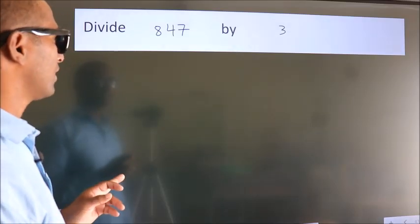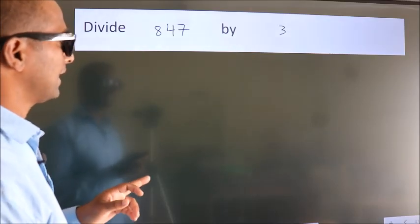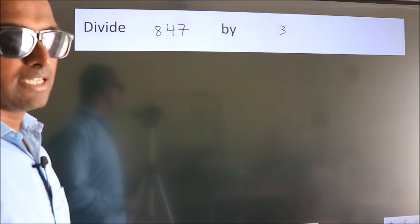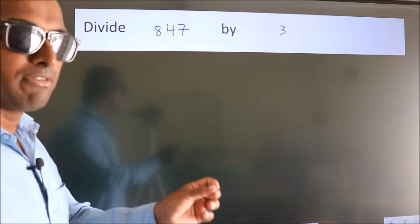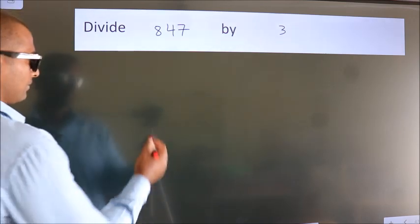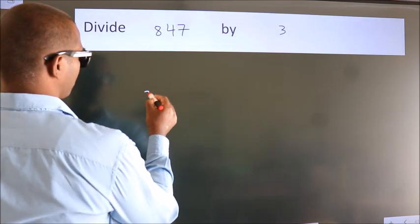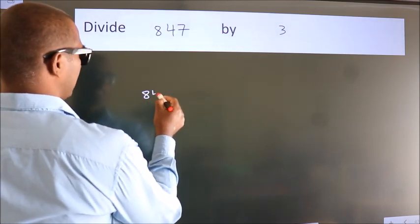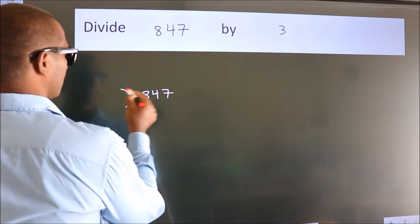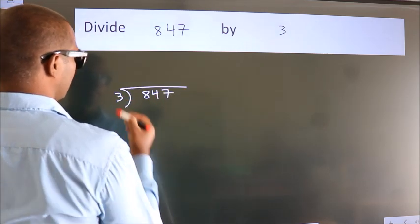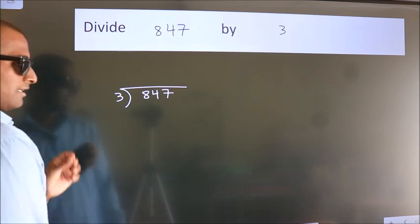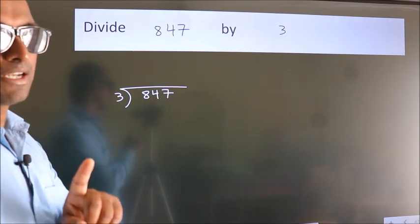Divide 847 by 3. To do this division, we should frame it in this way: 847 here, 3 here. This is your step 1.